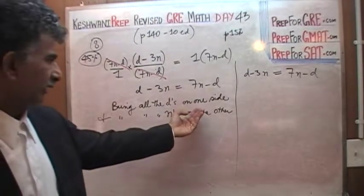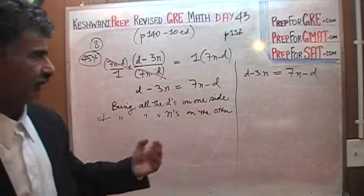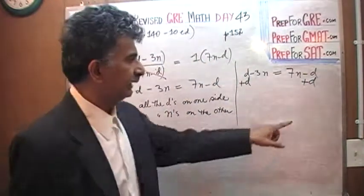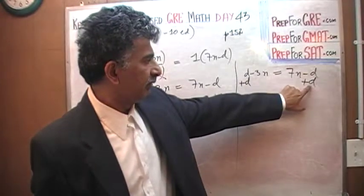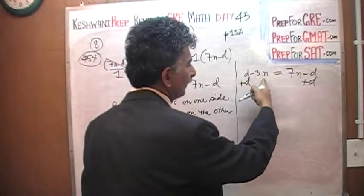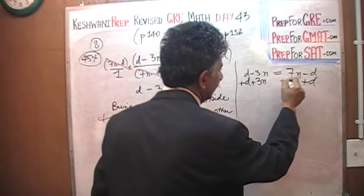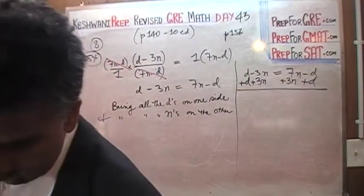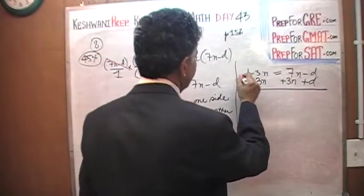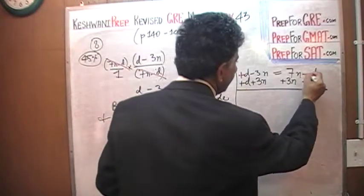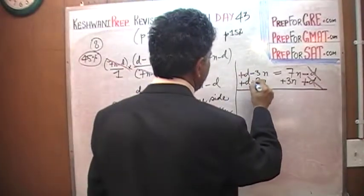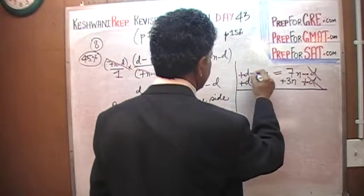We are going to bring all the D's on one side and all the N's on the other side. Let's add D to both sides. Since this is a negative 3N, when we add D to this side, the D's are going to cancel out. Let's also add positive 3N to both sides. Since we are adding the same quantity to both sides of the equation, we have not changed the equation. Positive D and negative D cancel out. Negative 3N and positive 3N cancel out.